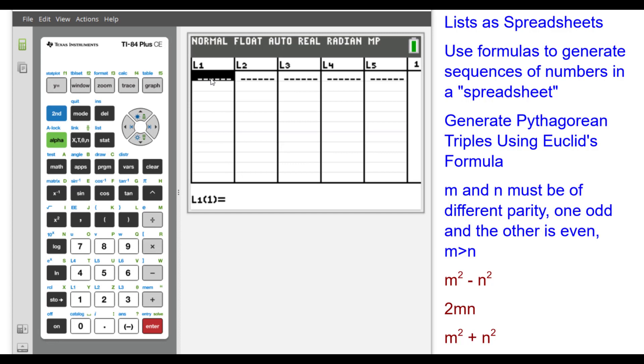L1 will have the variables for M and L2 the variables for N. So I'm going to start with L1's first number being 2. In list 2, I'm going to make it so that L2 is L1 minus 1. So these are different parities. Notice it's locked in.